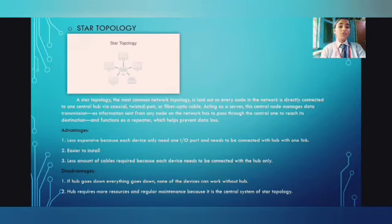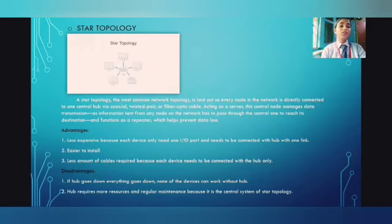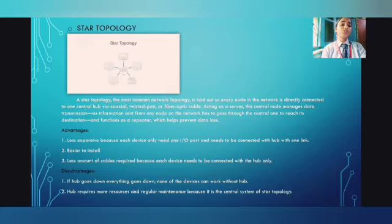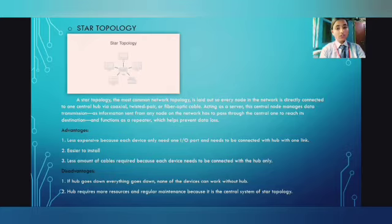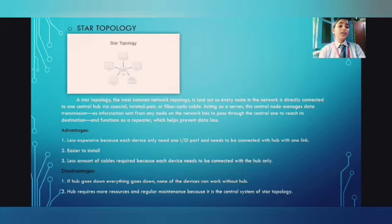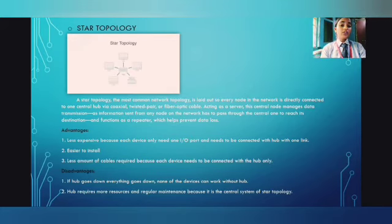The first topology is star topology. Star topology, the most common network topology, is laid out so every node in the network is directly connected to one central hub via twisted pair or fiber optic cable, acting as a server. This central node manages data transmission — information sent from any node has to pass through the central one to reach its destination, and it functions as a repeater which helps prevent data loss. Advantages: easier to install, less expensive, and fewer cables required since each device only connects to the hub. Disadvantage: none of the devices can work without the hub.